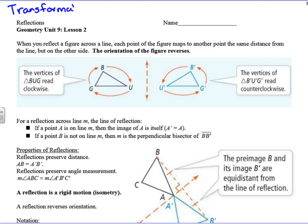Last time we talked about translations and we talked about a rigid motion. A rigid motion preserves two things: distance and angle measure.